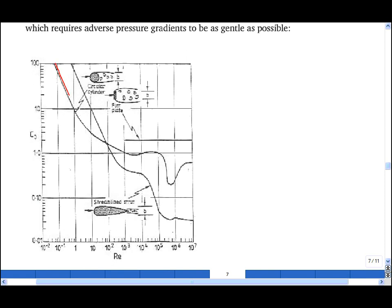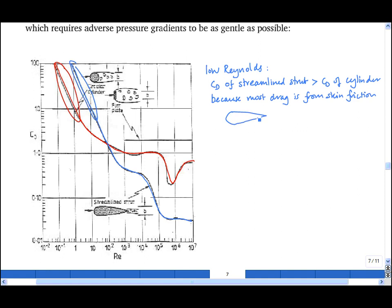For example, if we compare the drag on a circular cylinder with that for a streamlined strut with the same cross-sectional area as viewed from the front, we see that at low Reynolds number, the streamlined strut has a higher drag coefficient than the cylinder. And that's because most of the drag arises from skin friction, and the streamlined strut has a higher skin surface area than the cylinder for a given frontal area.